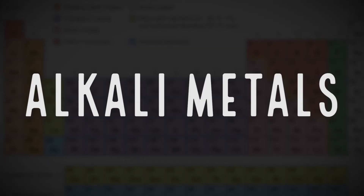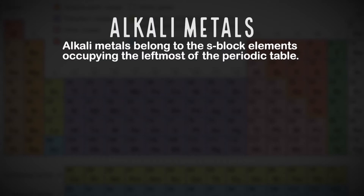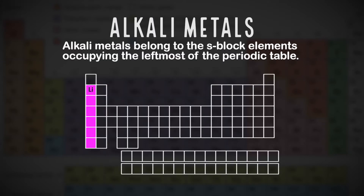Alkali metals are Group 1A metals of the periodic table. They are called alkalis because they form alkalis when they react with water.